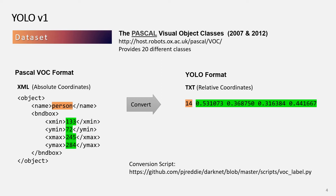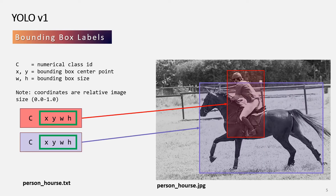YOLO used the Pascal Visual Object Classes dataset, combining the 2007 and 2012 splits. A pre-processing step is required to convert from the VOC format to the YOLO format. I used the conversion script provided by the author. The YOLO bounding box label starts with a numerical class ID followed by normalized relative coordinates, where the XY coordinate is the bounding box center, allowing the bounding box to be scalable regardless of image size.